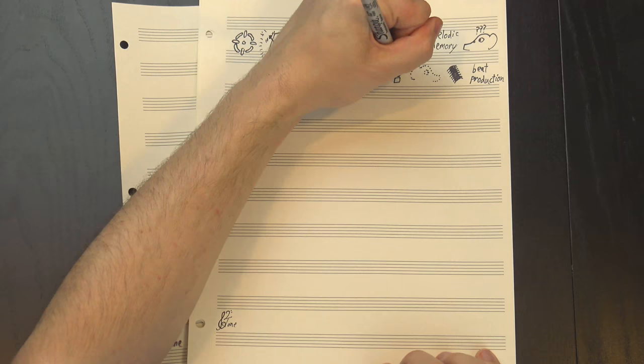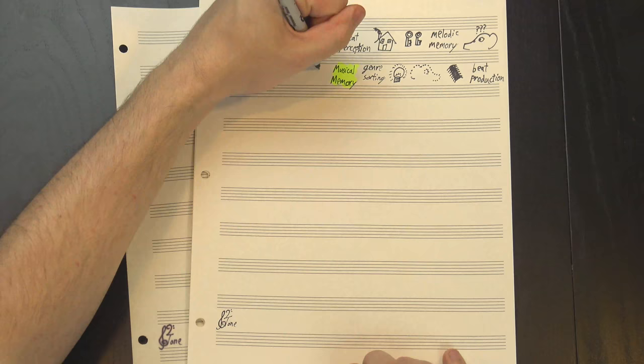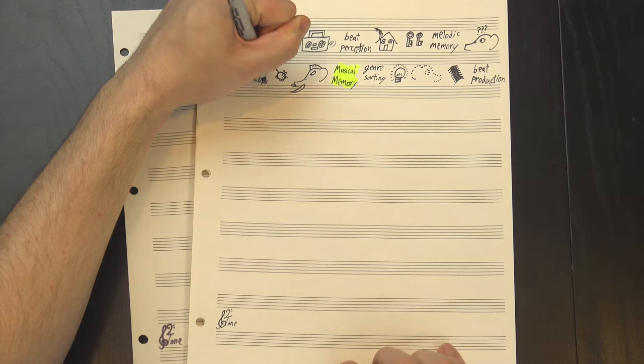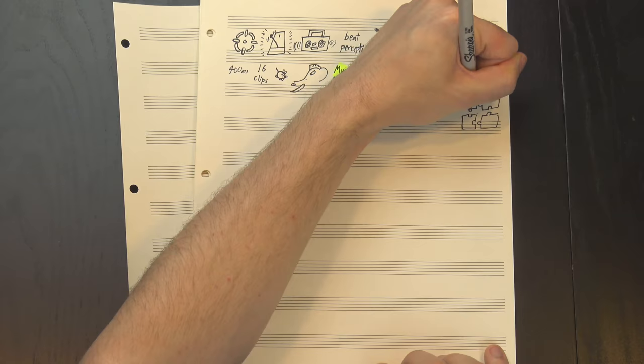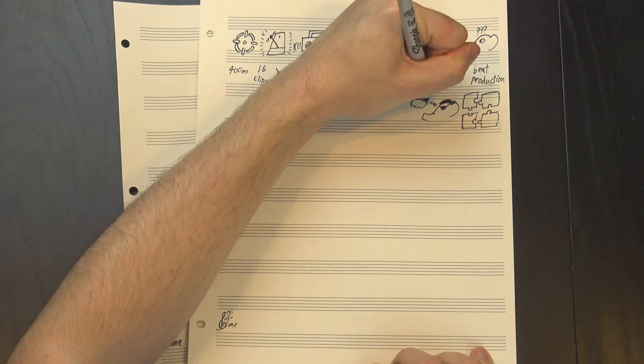The first is a genre sorting test, based on some research we've talked about before, where test subjects were able to identify the names and styles of songs from incredibly short samples. This test uses 16 clips, each 400 milliseconds long, and asks participants to sort them by similarity into four groups of four clips each. The songs were chosen to be emblematic of certain genres, and listeners who were able to correctly associate different songs of the same genre were considered more musically sophisticated.